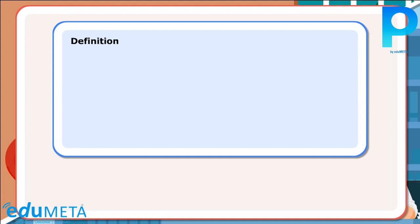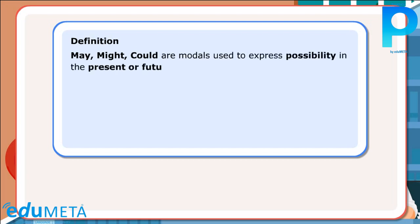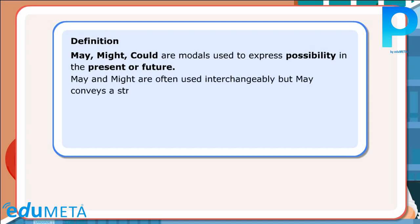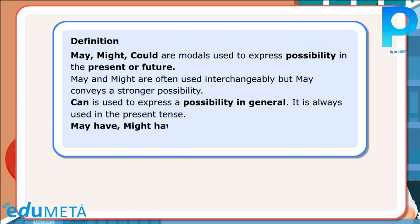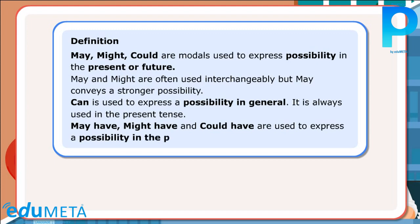Definition: May, might, and could are modals used to express possibility in the present or future. May and might are often used interchangeably, but may conveys a stronger possibility. Can is used to express a possibility in general and is always used in the present tense. May have, might have, and could have are used to express a possibility in the past.